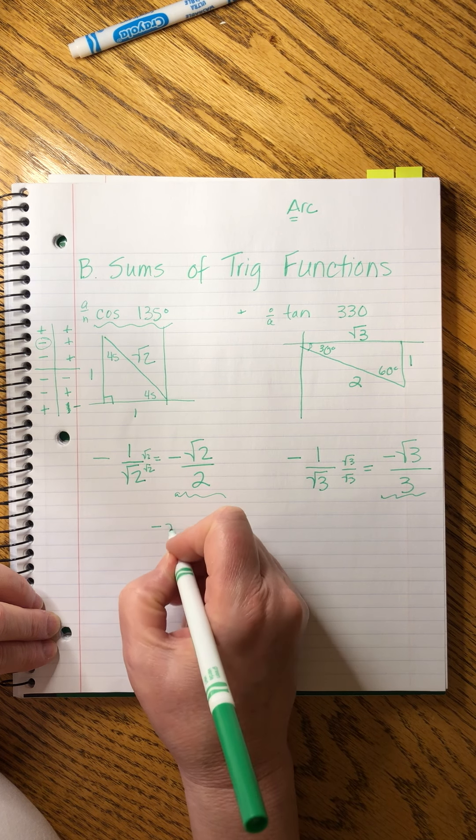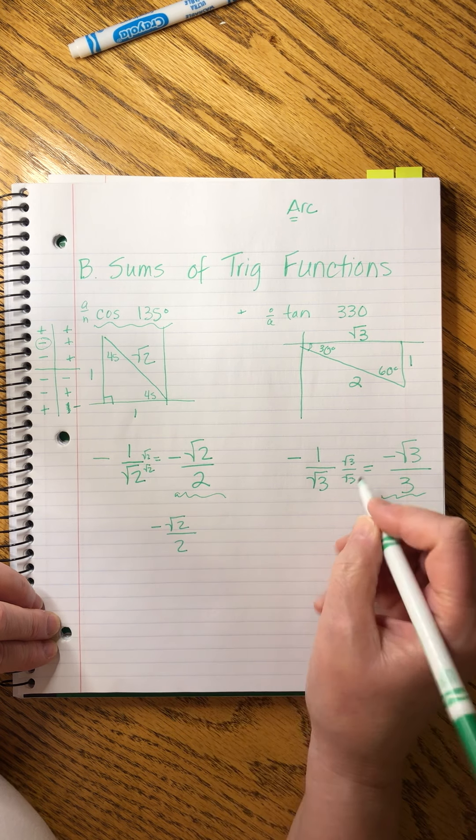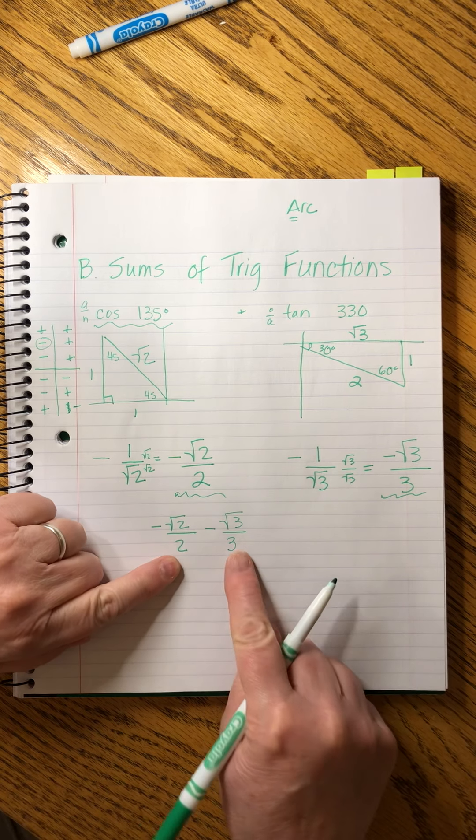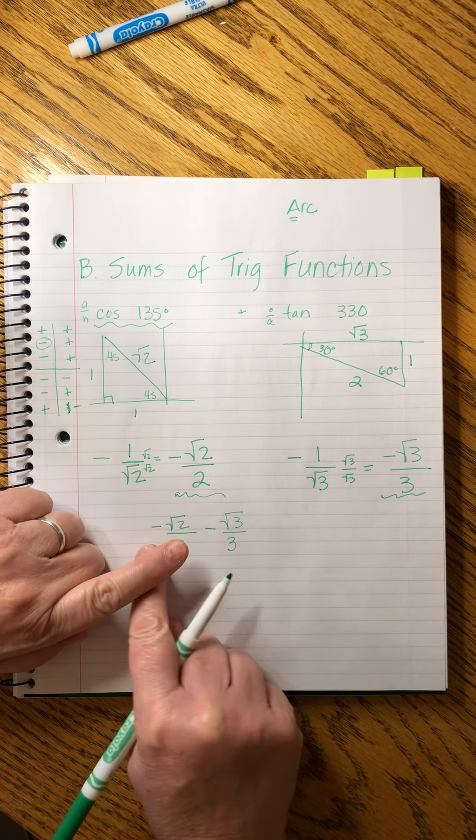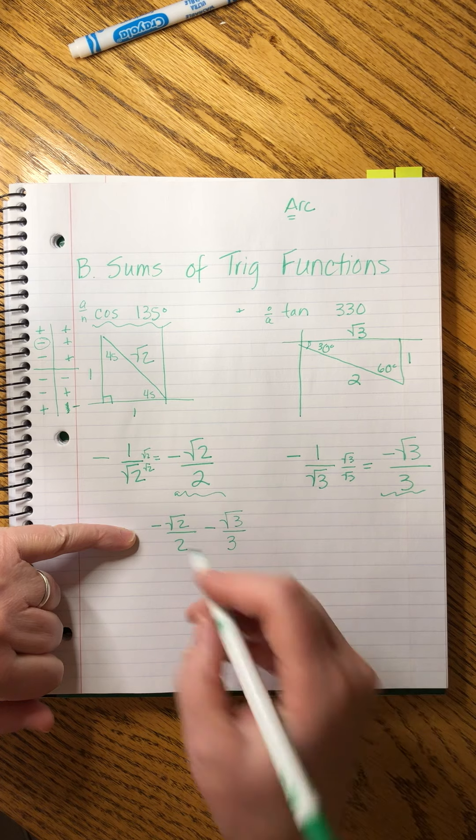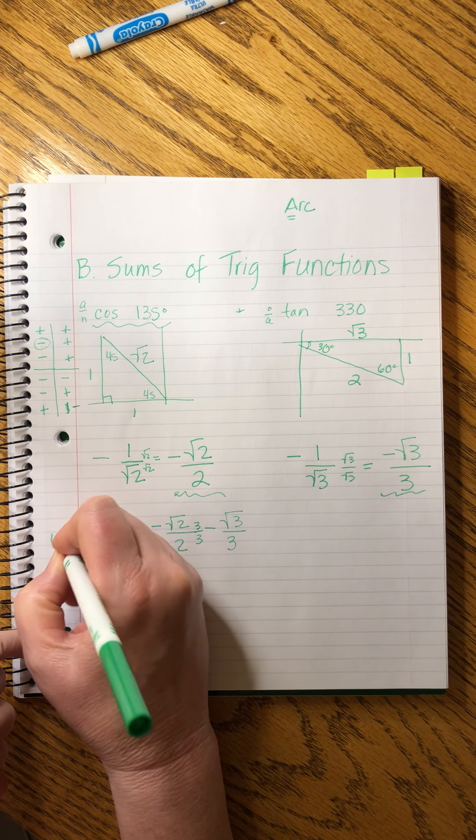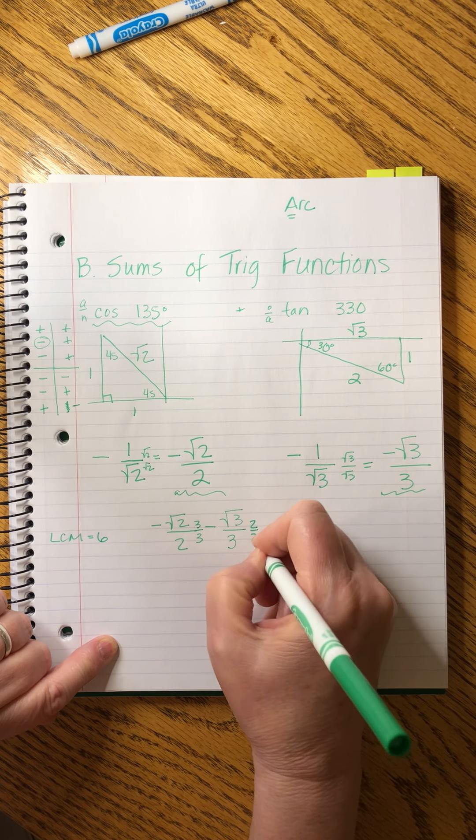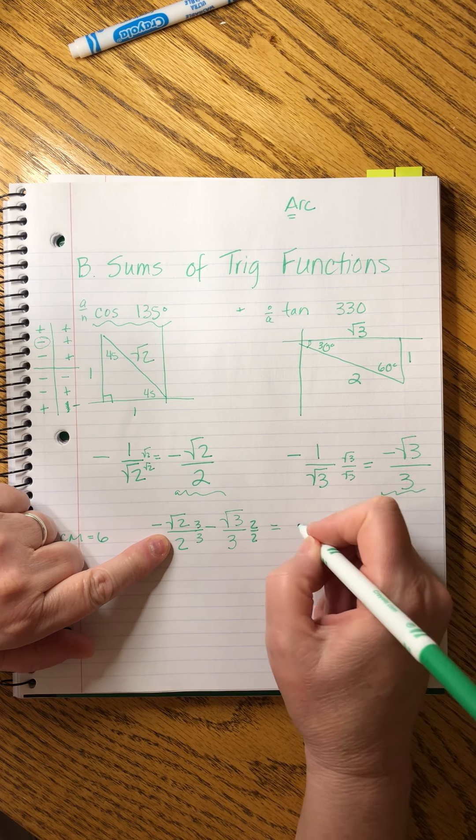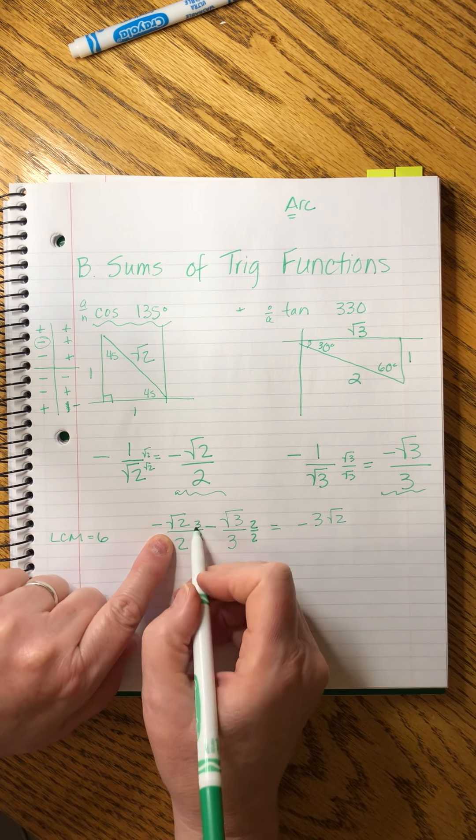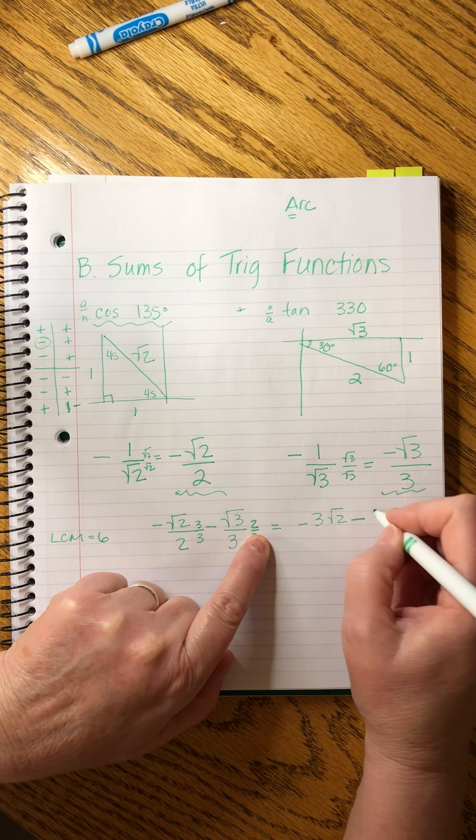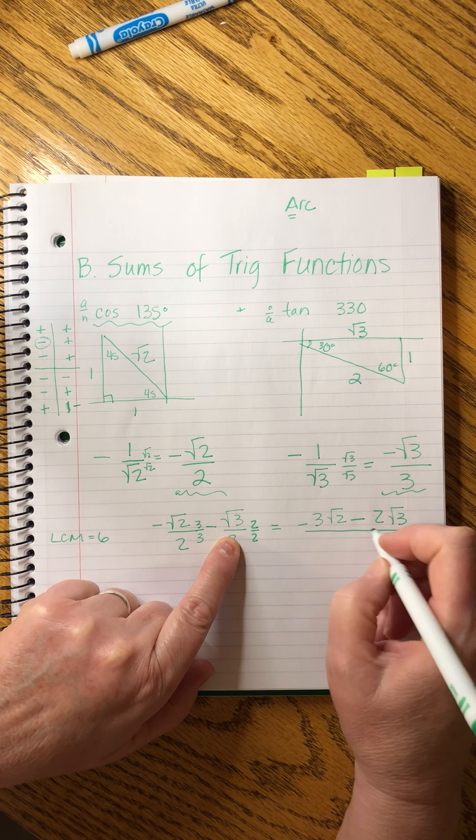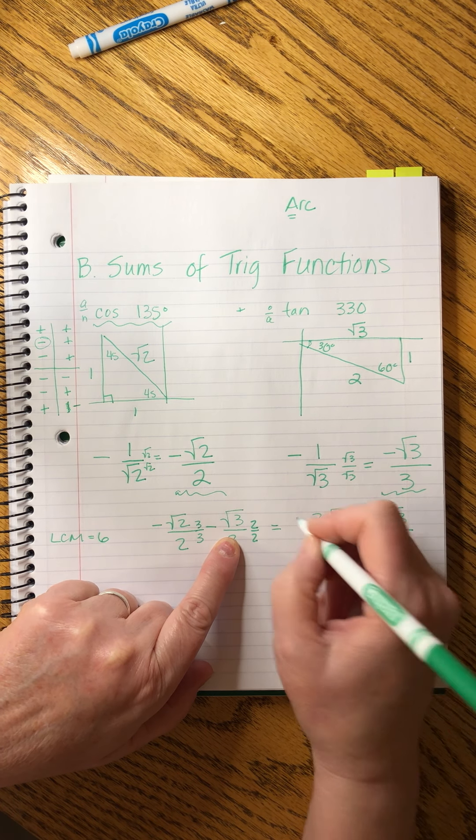Now, all we have to do is combine these two. So it'll be negative square root of two over two minus square root of three over three. And that just means we've got rational denominators, but we have to make them match so we can write them as one happy fraction. We'll multiply this side by three over three, our LCM is six. So we'll do three over three, two over two. And our final answer is negative three times the square root of two minus two times the square root of three, and it's all over six.